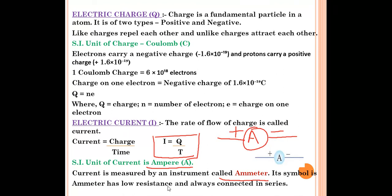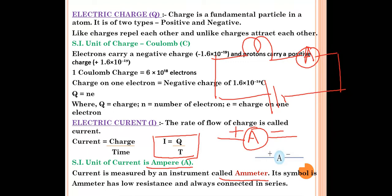Ammeter has low resistance and is always connected in series. If we connect an ammeter in parallel, the circuit can burn or get damaged. So we should always connect it in series — connecting it in parallel can burn the meter or the circuit.